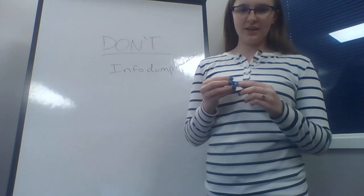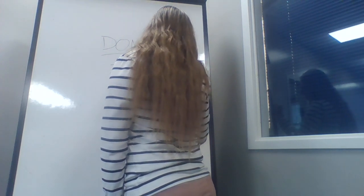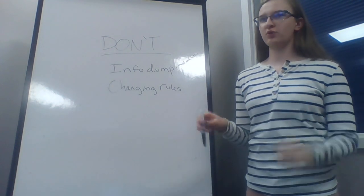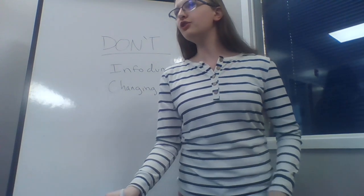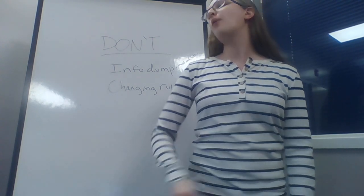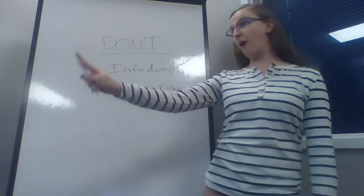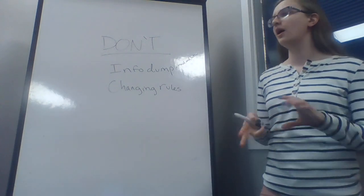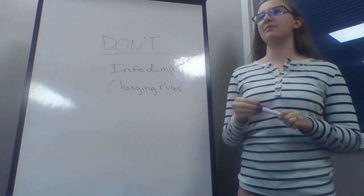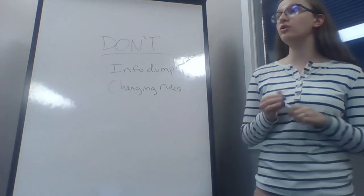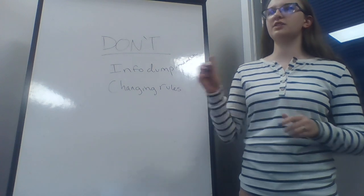The next don't is changing the rules of your magic system. This often happens because it's more convenient for you as a writer. You made a rule that you can never use magic if you have blue hair, but then your main character has blue hair and you really wanted them to have magic. 'Well, they're just the exception.' No — you've got to explain why it did or didn't work, why they have blue hair and the magic works. If you're going to have rule exceptions, you've got to explain it within the rules.